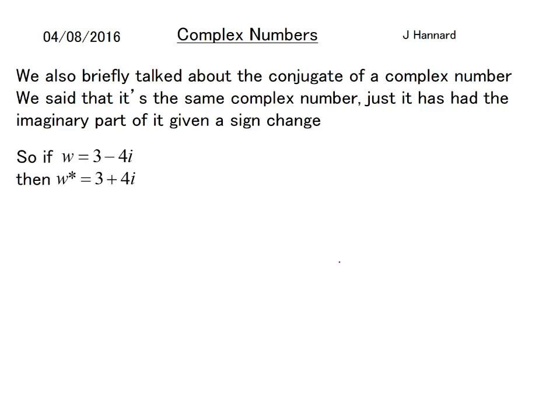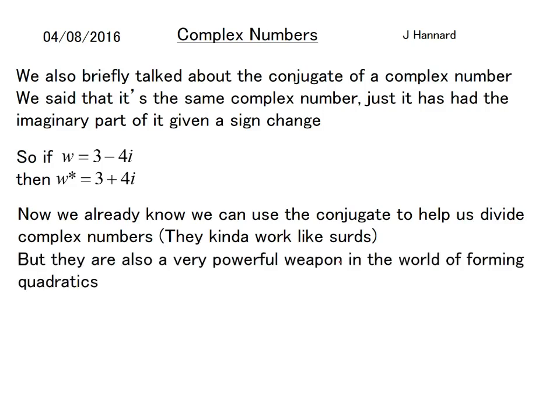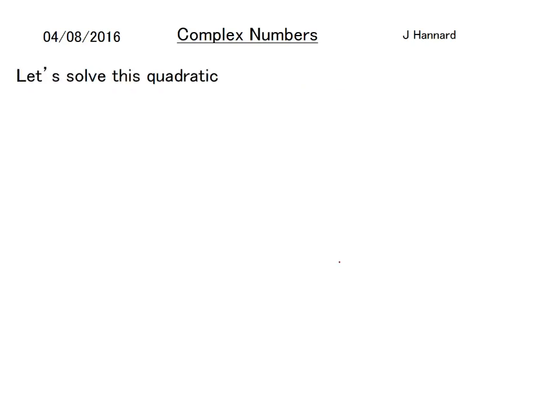Now we already know that we can use the conjugate to help us divide a complex number, and we know they work like surds. But they're also a very powerful weapon in forming quadratics. Let's solve this quadratic: x² - 4x + 6 = 0. It doesn't factorize, so I'll just use the formula.